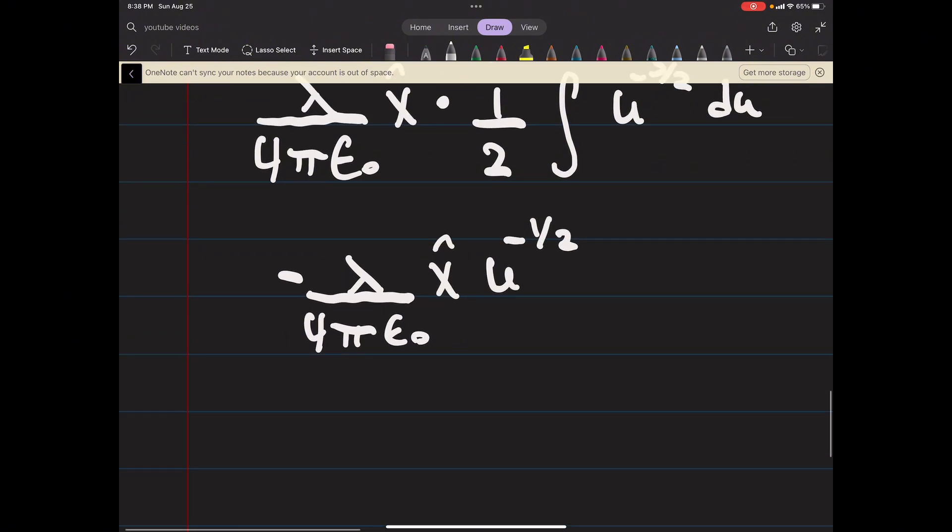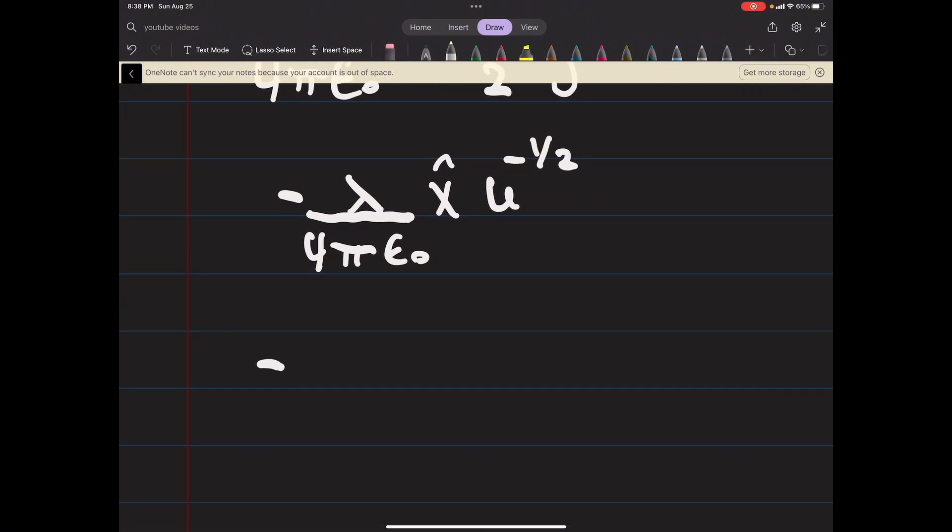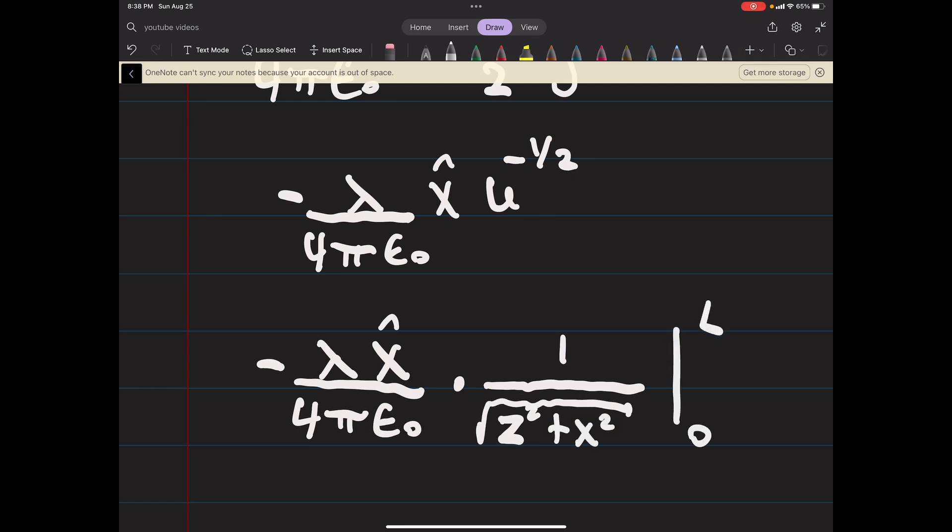That two will cancel with the one half and you'll get u to the minus one half. We're going to back substitute, so minus lambda x hat over 4 pi epsilon naught times 1 over the square root of z squared plus x squared.